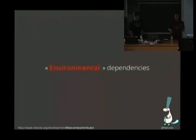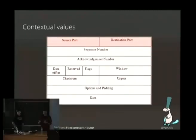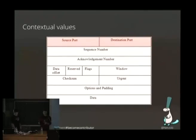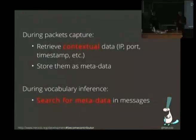We are also able to find environmental dependencies — contextual values present in the environment that appear inside message formats. For example, in TCP you can find source port, destination port, or IP addresses in the IP or TCP header, and you can also find them in the system using ifconfig. During packet capturing, we store characteristics of the environment like IP addresses, and during the inference phase we look for them inside the messages.